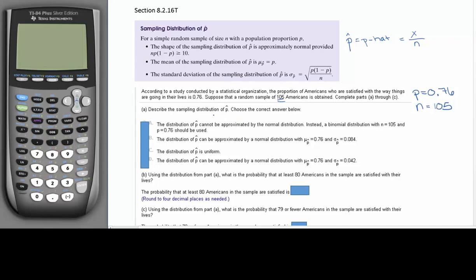So to figure this out, we're going to have 105, so N times P, which is 0.76 times 1 minus 0.76. And that will give us 19.152.